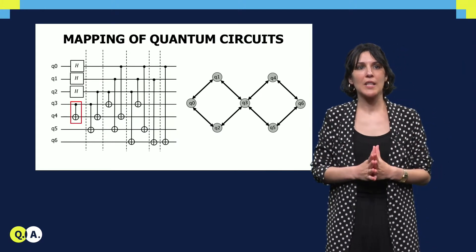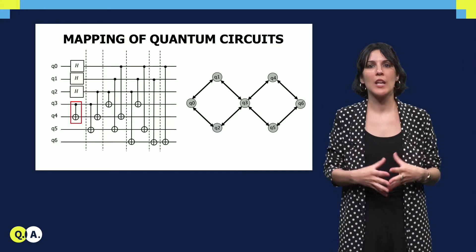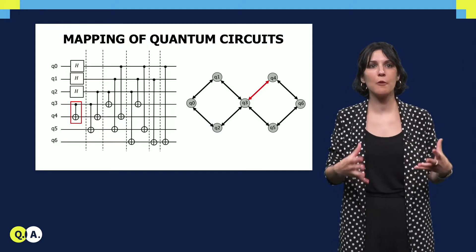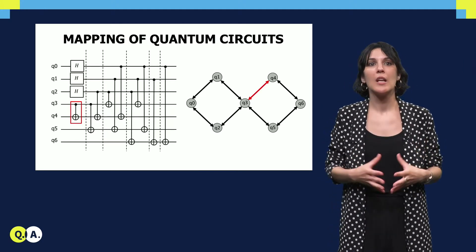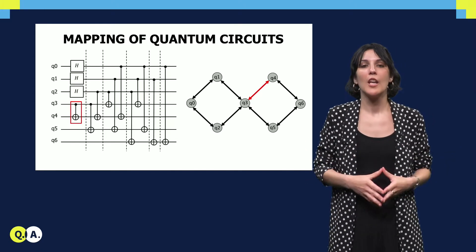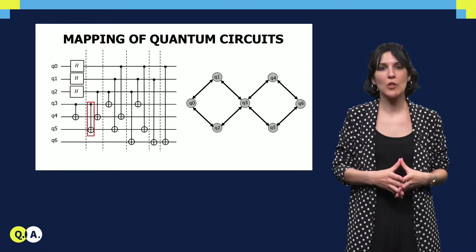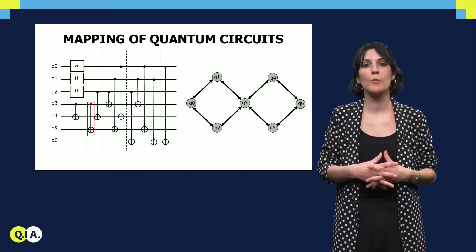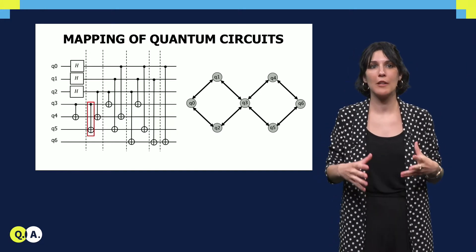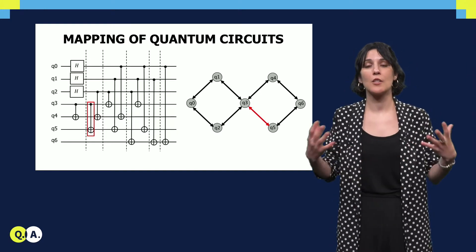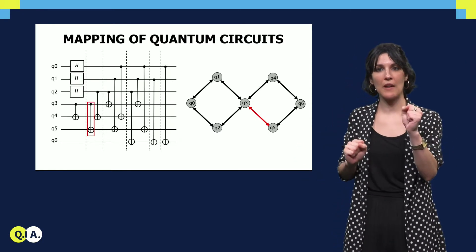If we look at the example, if we are going to perform a CNOT gate between qubit 3 and qubit 4, that is possible as there is a direct connection between them. If we move to the next CNOT, and now we are going to perform a CNOT between qubits 3 and 5, again, this is also possible because those qubits are neighbors.